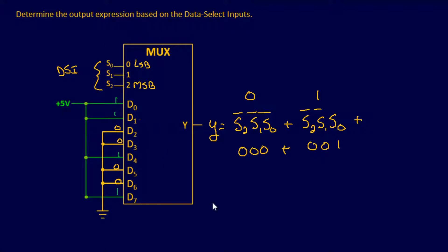So 4 is going to be s2, s1, s0. And the binary number for 4 is 1, 0, 0.